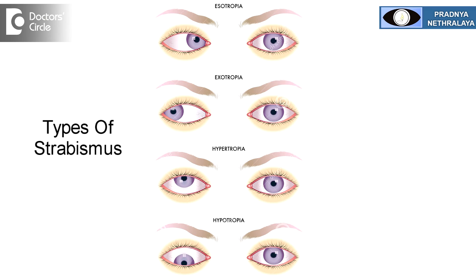Strabismus or squint are of various types. Inward deviation of the eye is called as an esotropia, the outward deviation of the eye is called as an exotropia, the upward deviation of the eye is called as a hypertropia, or downward deviation of the eye is called as a hypotropia.